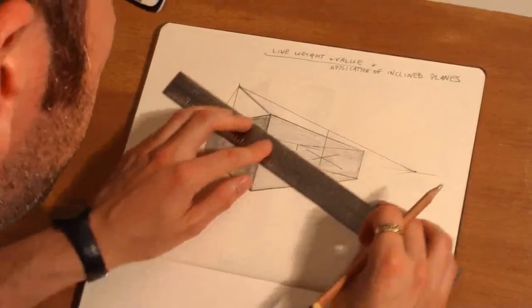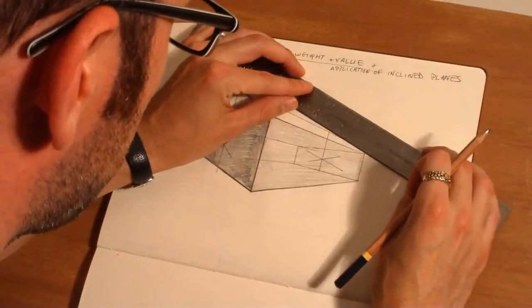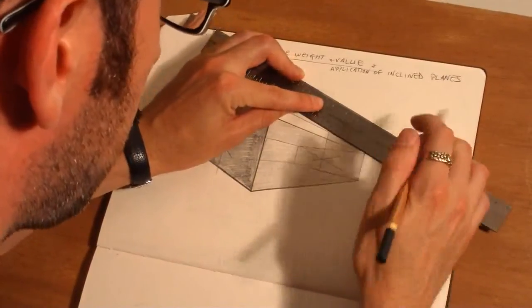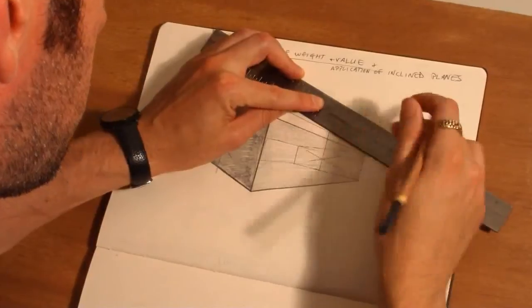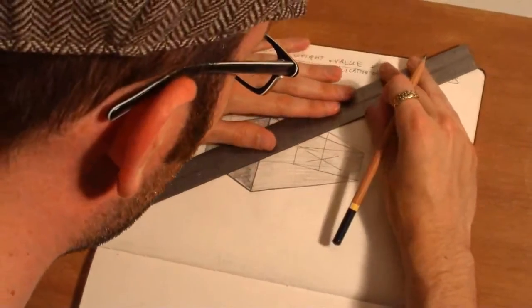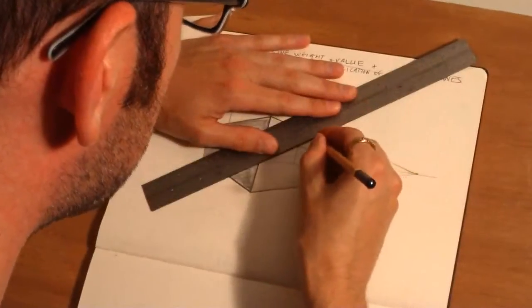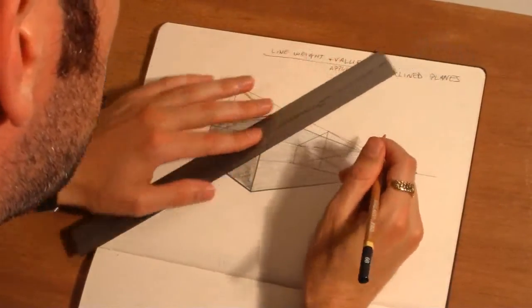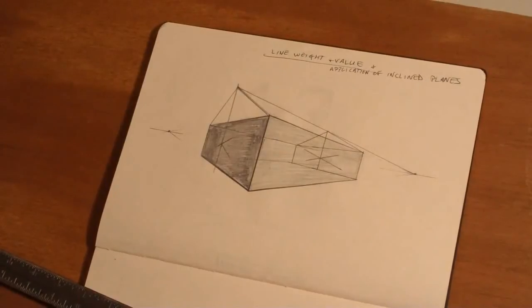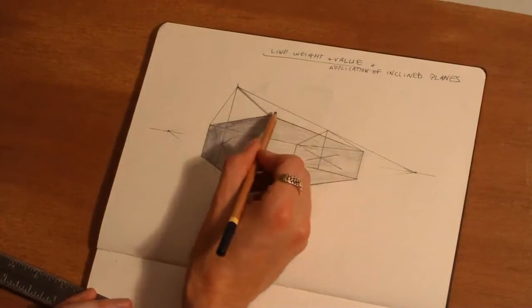Alright, now we found our roof line so we're going to draw the apex back to this side. One thing that you've noticed is now we have our third value. We have our highlighted section so sun is hitting the roof but not everything else.